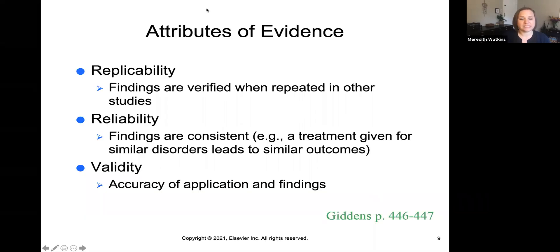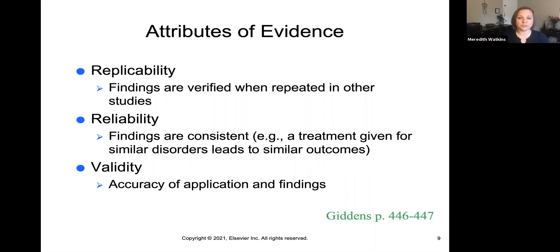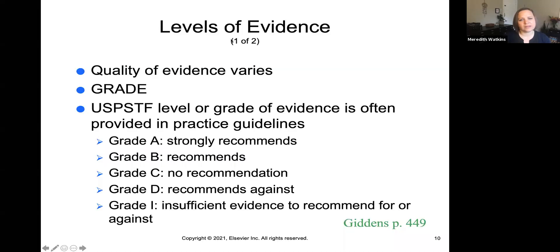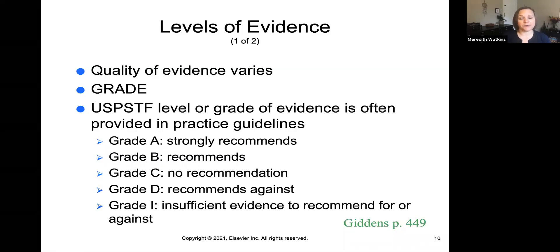Here are some attributes of evidence — things that make it reliable and trustworthy. First is replicability: can you repeat those results in other studies? If not, something may have been wrong with the study. Is it reliable — are findings consistent across similar treatments for similar disorders? And is it valid — are the results accurate in their application and findings? Evidence can have different levels of validity and reliability, and there are checklists to determine the level and quality of evidence.